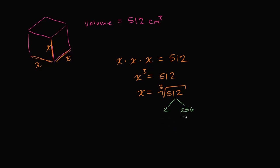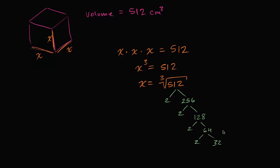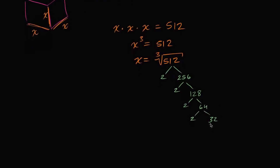256, that's also divisible by 2. That's 2 times 128, which is also divisible by 2. That's 2 times 64, which is also divisible by 2. That's 2 times 32. Let's see, I can keep going. That's 2 times 16, which is 2 times 2 times 8, which is 2 times 4, which is 2 times 2.